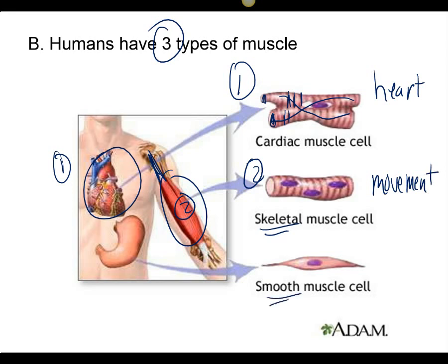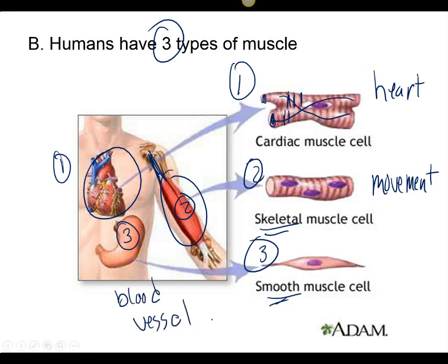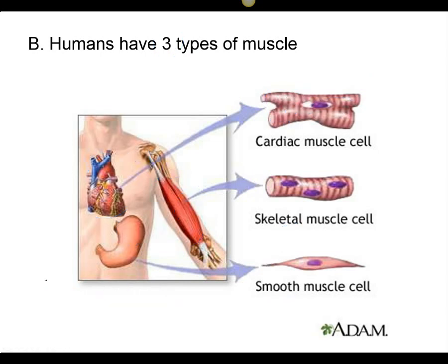Smooth muscle is found inside of a lot of our hollow organs like our esophagus, small intestines, and stomach. It's also in our blood vessels, which allows our vessels to dilate and open up much larger, or to constrict and get even smaller.